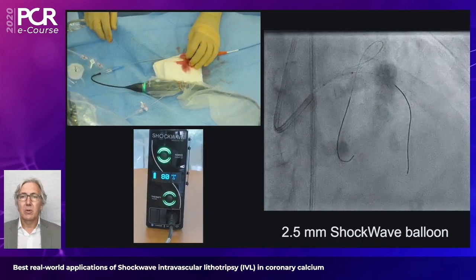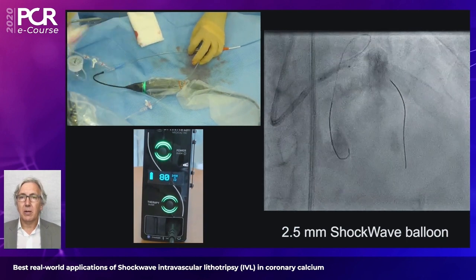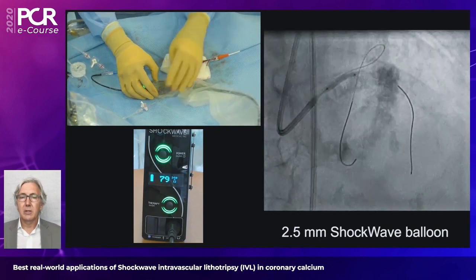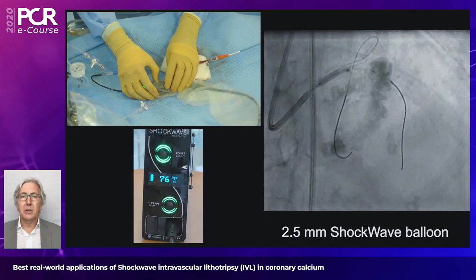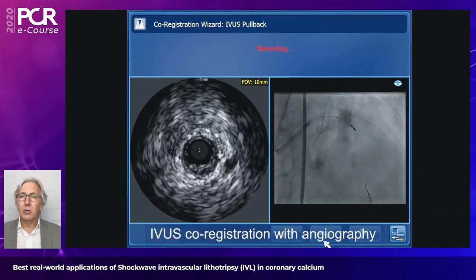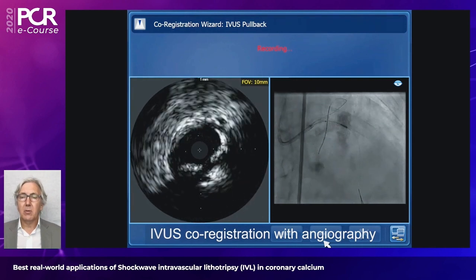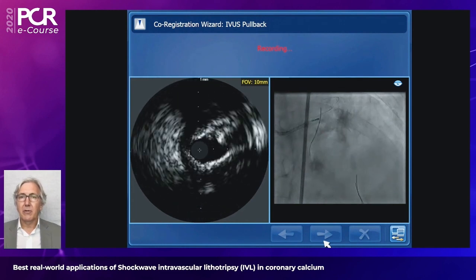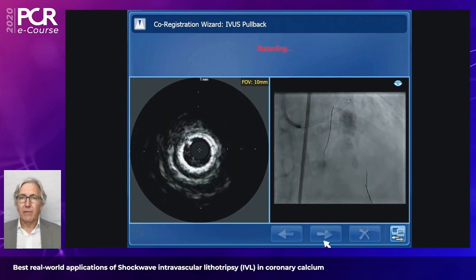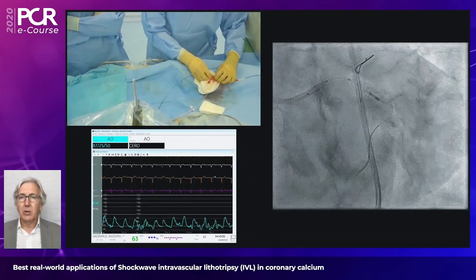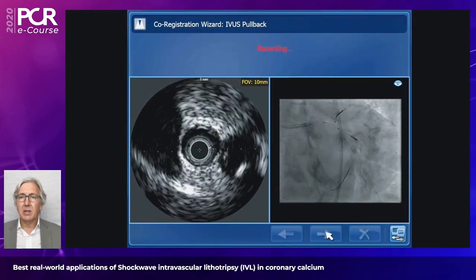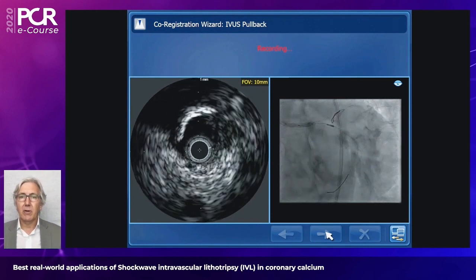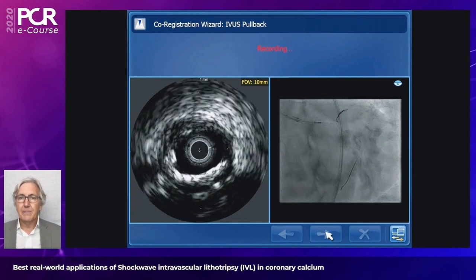You can see the large vessel size. We started first with a 2.5mm shockwave balloon to condition the plaque towards the LAD, and you can see the bursts of energy being released. Remember we are occluding the left main, so to avoid deep ischemia we perform fewer than 10 deliveries of energy — limiting to five or six at maximum. We then assessed vessel dimensions and moved to treat the circumflex with IVUS.